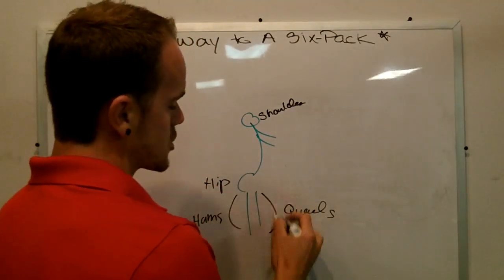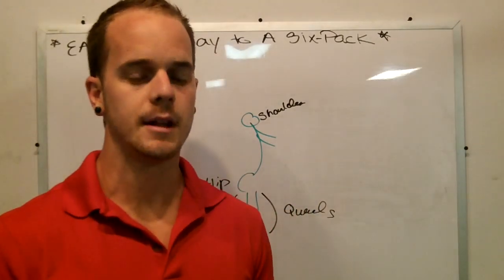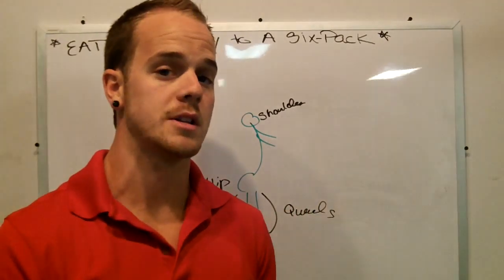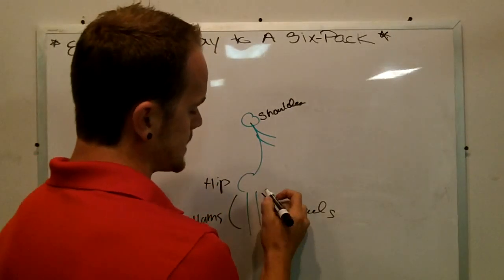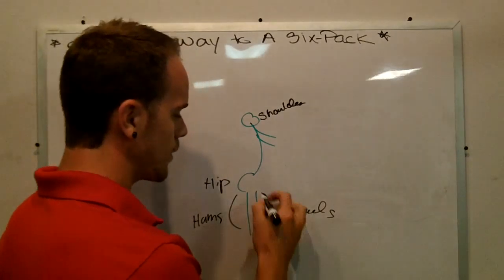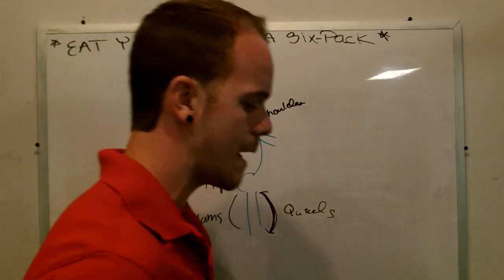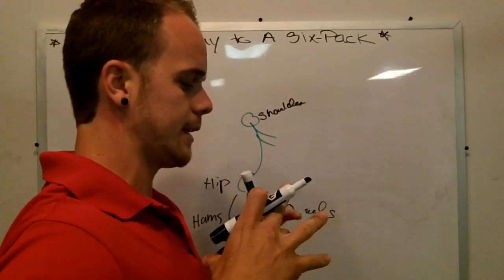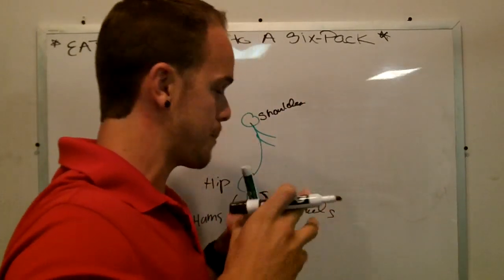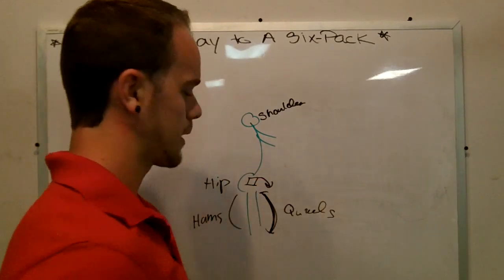So what happens is if you do not stretch, let's say you always do front squats. Front squats are very quad dominant exercise. So let's say all you do is front squats and you never stretch. What's going to happen is these are going to keep on developing, keep on getting stronger, keep on getting tighter, which is going to pull you into this position. It's going to pull that pelvis forward and everything is going to tilt this way as far as your pelvis, this being your pelvis right here, it's going to tilt forward.